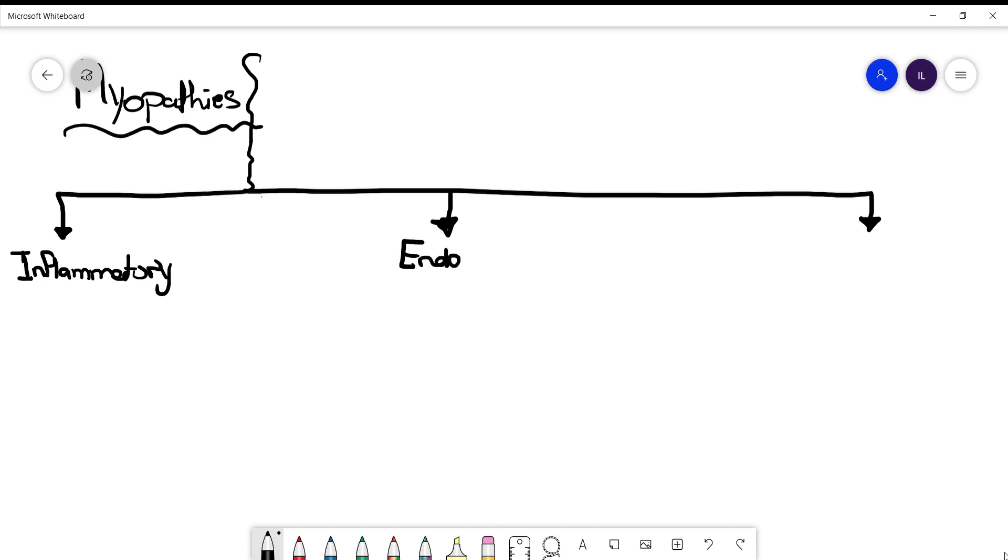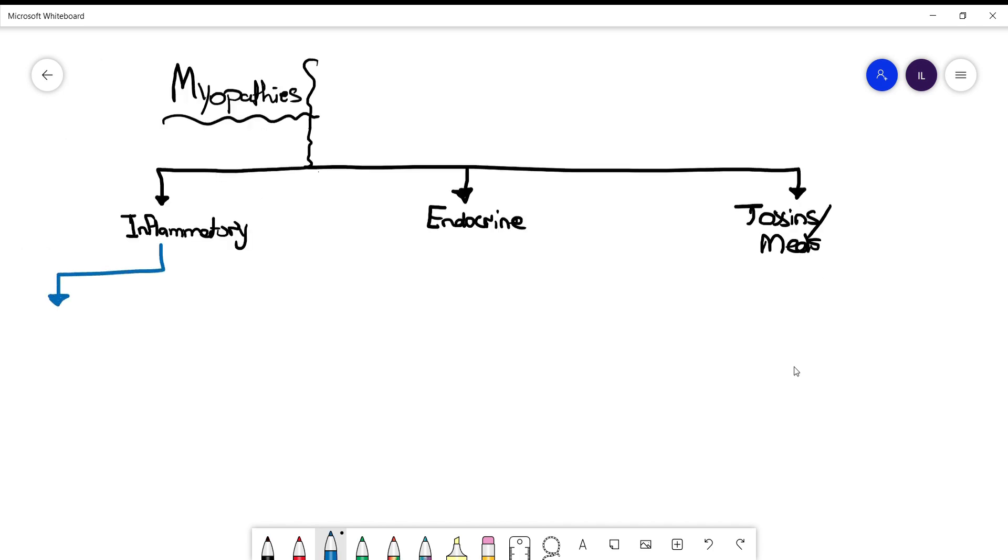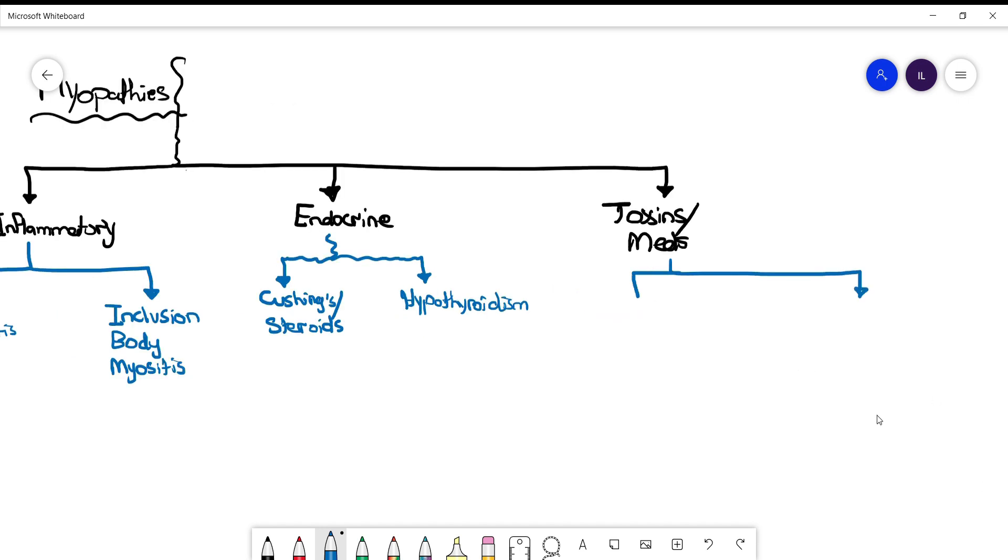Inflammatory myopathies mainly include polymyositis and inclusion body myositis. Endocrine-related causes include hypo- and hyperthyroidism as well as Cushing syndrome or high steroid intake. For toxins, we have alcohol and statins as the main causes of myopathies.